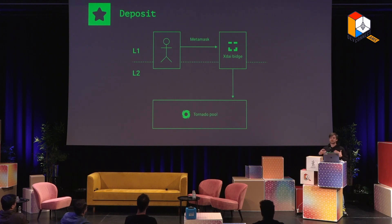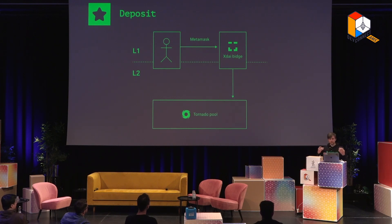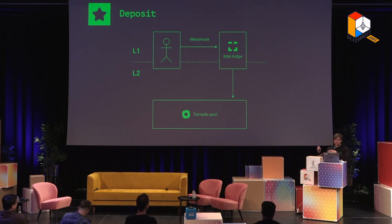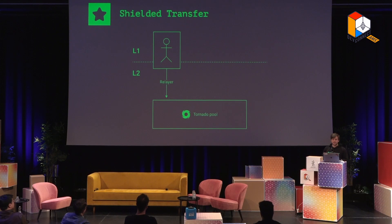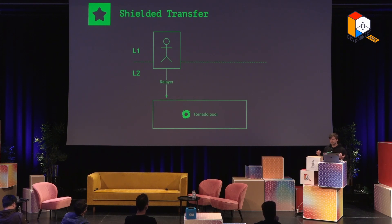To understand what we wanted from an L2 solution, here's a simple explanation of the user flow. When you deposit into Tornado Cash Nova, you do just one simple transaction — you sign and push confirm in MetaMask. It sends Ether to the xDai bridge, because we use Gnosis Chain and the xDai bridge, and then it forwards to the Gnosis Chain and connects to the Tornado pool.